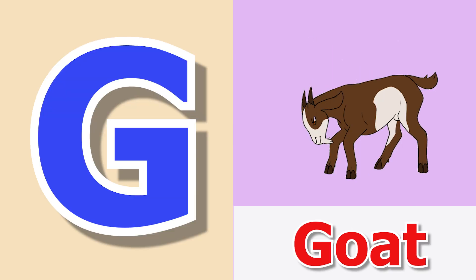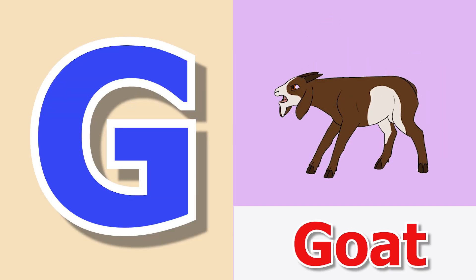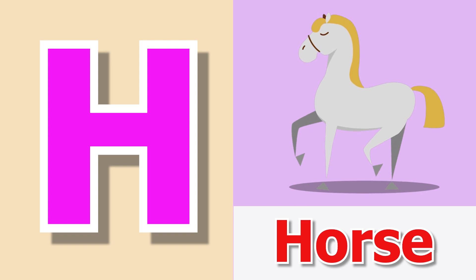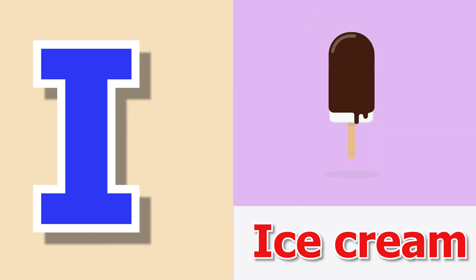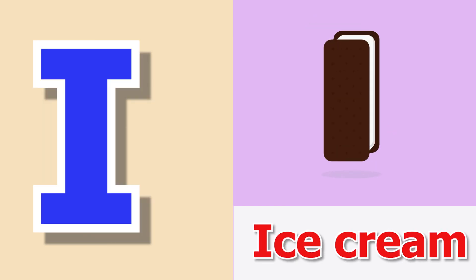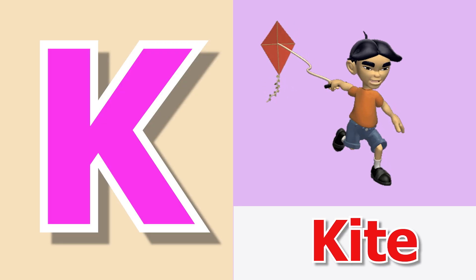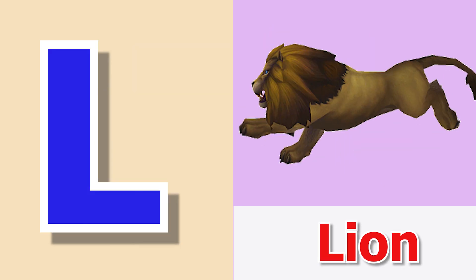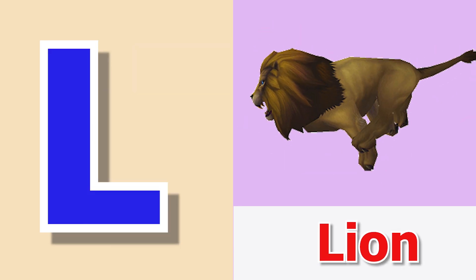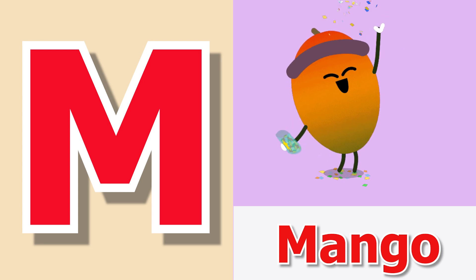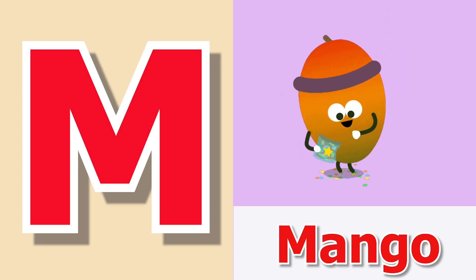G for Goat, H for Horse, I for Ice Cream, J for Juice, K for Kite, L for Lion.